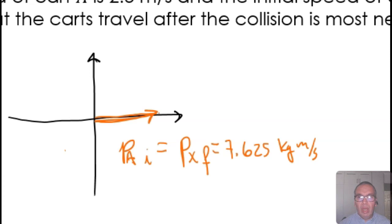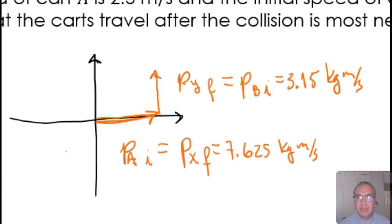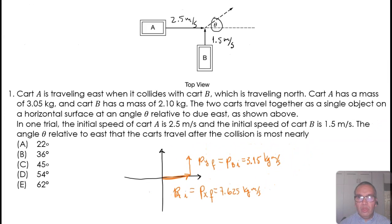Correspondingly, the Y component of the momentum is originally the momentum carried by cart B, which is 3.15 kg meters per second. These two are the two components of the momentum that we must consider to calculate the direction.